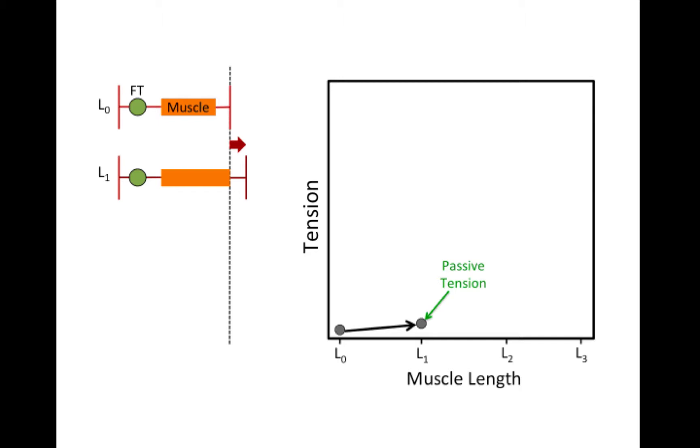While that muscle is being kept at this new increased length, we are now going to stimulate that muscle electrically so that it will contract. When we do that, we will see that the force or the tension will increase. The tension that is developed, the maximal tension, is called the total tension, and it is the sum of the active tension generated by the contracting muscle plus the passive tension.